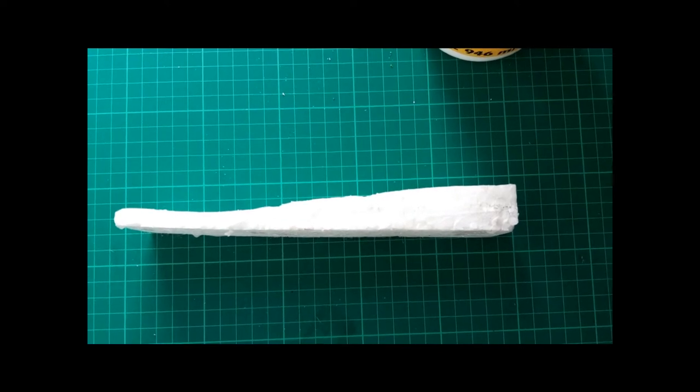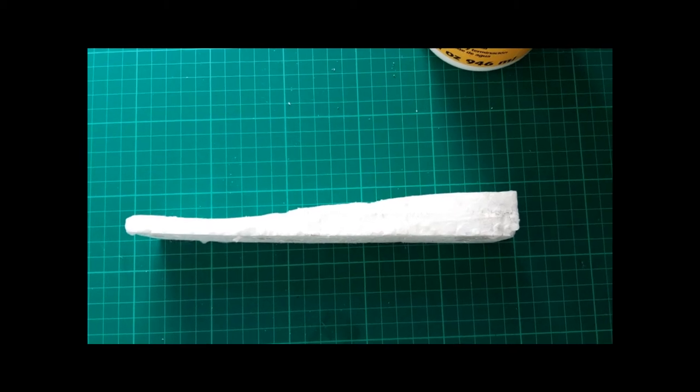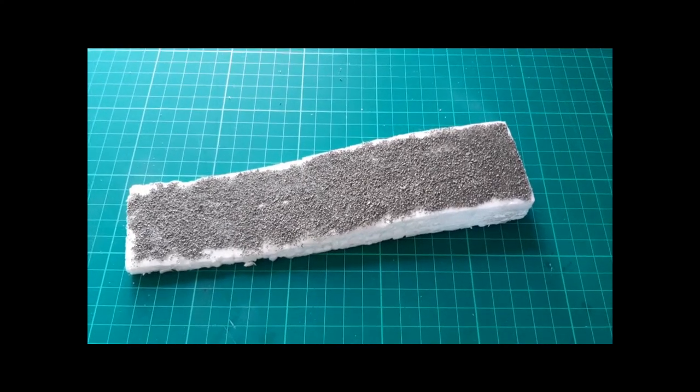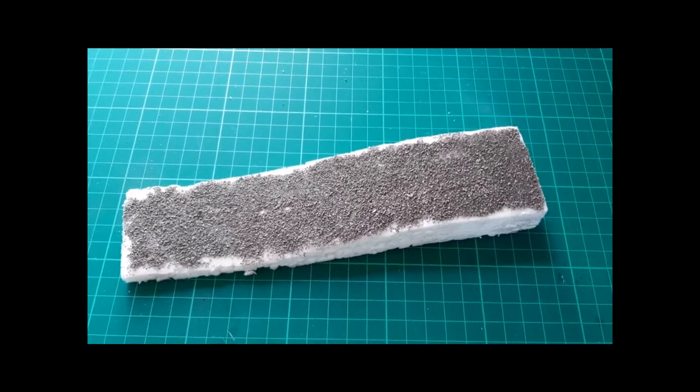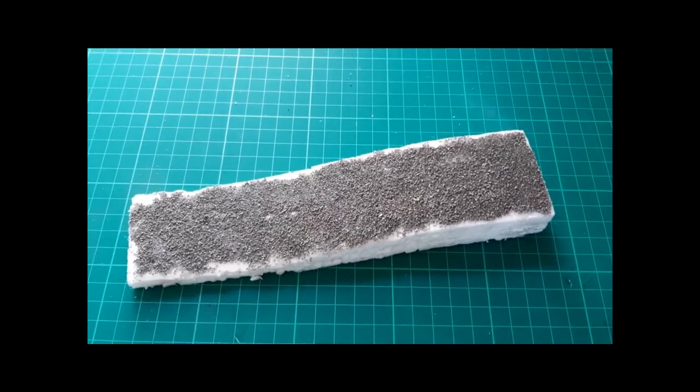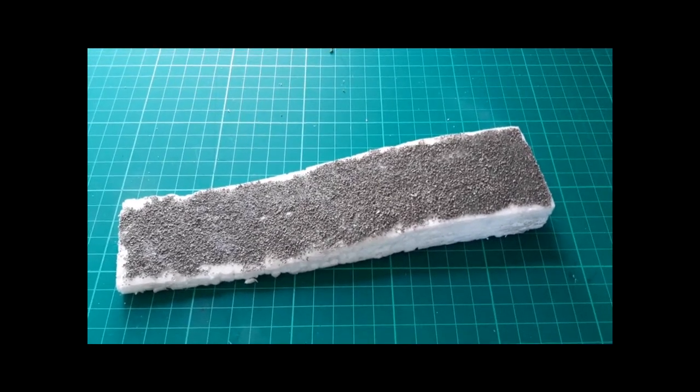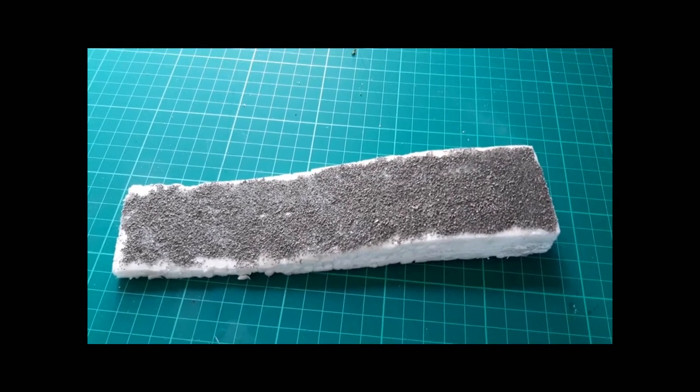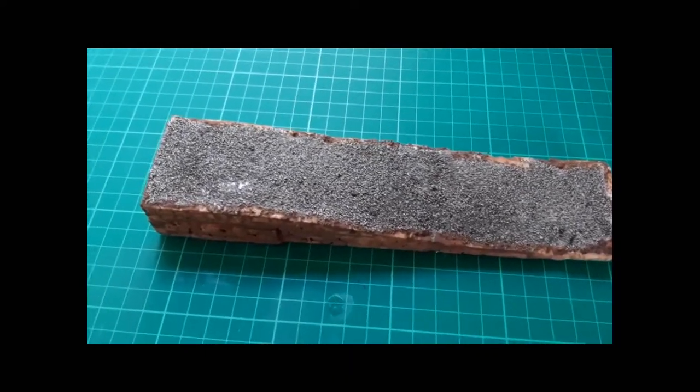I would say right away that this is non-scale specific, so it doesn't matter what scale you're working in—the principles can all be applied. Here's the next step: I've applied a thin layer of PVA onto the surface and then used some ballast, actually N gauge ballast. I like it because it provides a real texture to a road rather than the printed surface you can buy as an alternative. We'll let this dry and then move on.